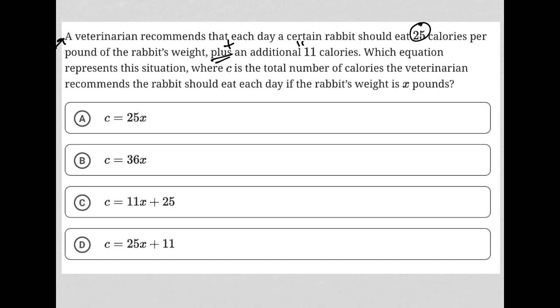So 25 plus 11, basically. But the 25 is not just a straight 25, it's 25 per pound. So I could call that 25p plus 11.